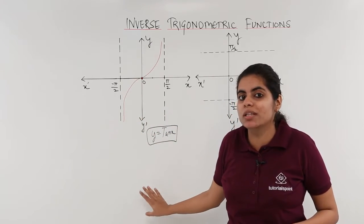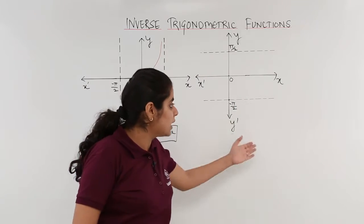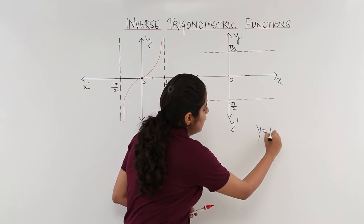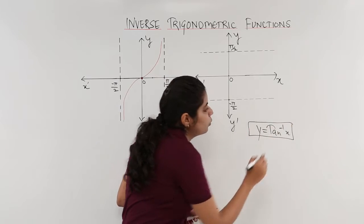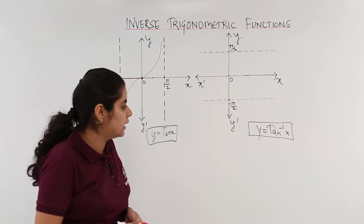The purpose was not to draw this graph. Rather, the purpose was to go about drawing the next graph of tan inverse x. So the next graph is y equals tan inverse x. How to go about drawing the graph of y equals tan inverse x? Simple criteria.